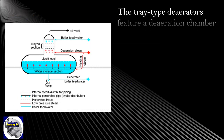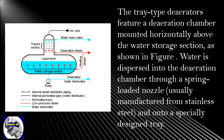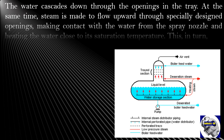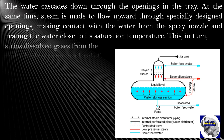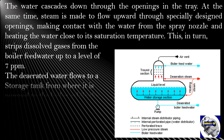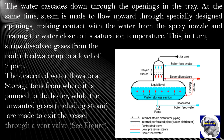Tray-type deaerators feature a deaeration chamber mounted horizontally above the water storage section, as shown in the figure. Water is dispersed into the deaeration chamber through a spring-loaded nozzle, usually manufactured from stainless steel, and onto a specially designed tray. The water cascades down through the openings in the tray. At the same time, steam flows upward through specially designed openings, making contact with the water from the spray nozzle and heating the water close to its saturation temperature. This strips dissolved gases from the boiler feed water to a level of 7 parts per million. The deaerated water flows to a storage tank from where it is pumped to the boiler, while the unwanted gases, including steam, exit the vessel through a vent valve.